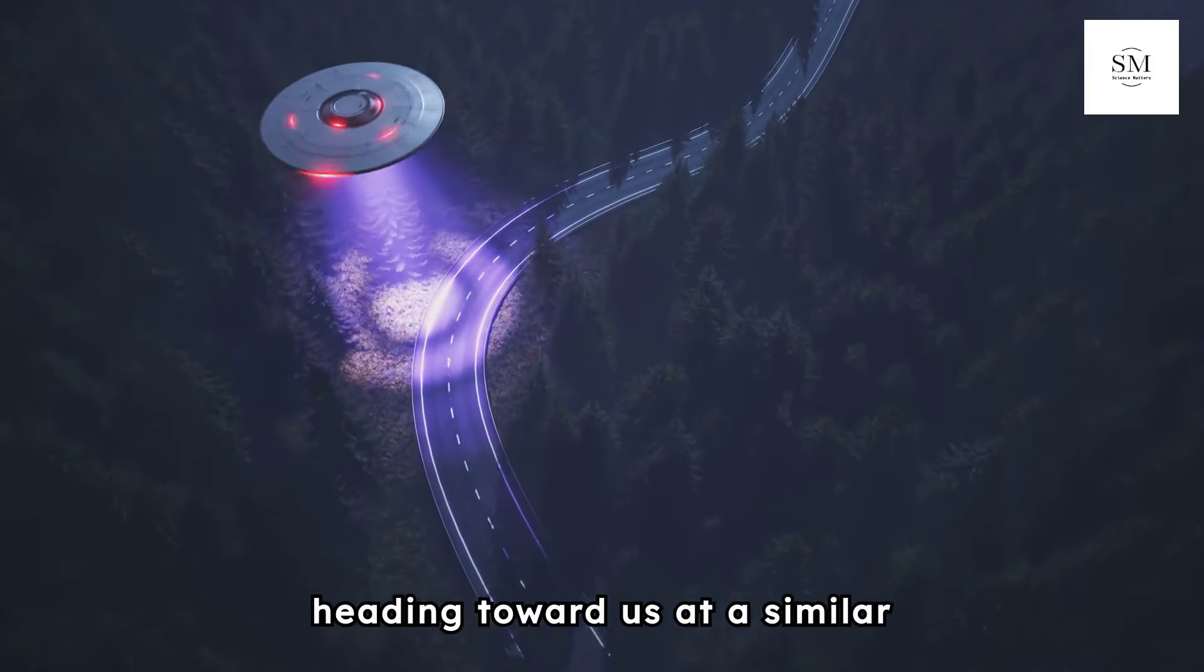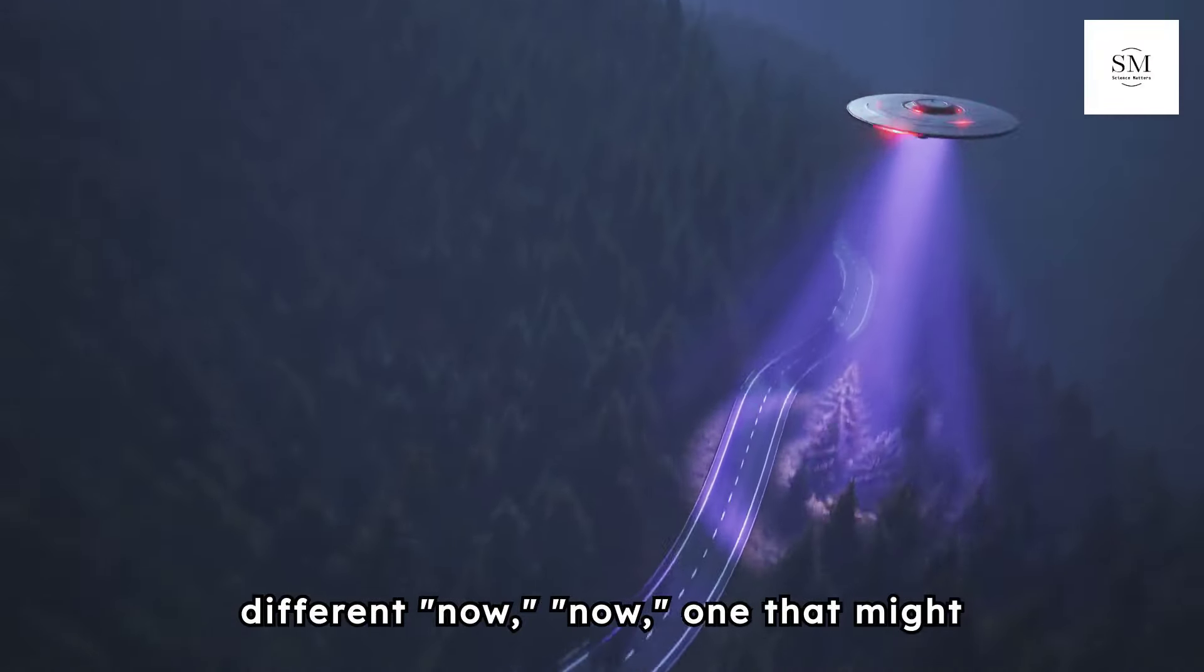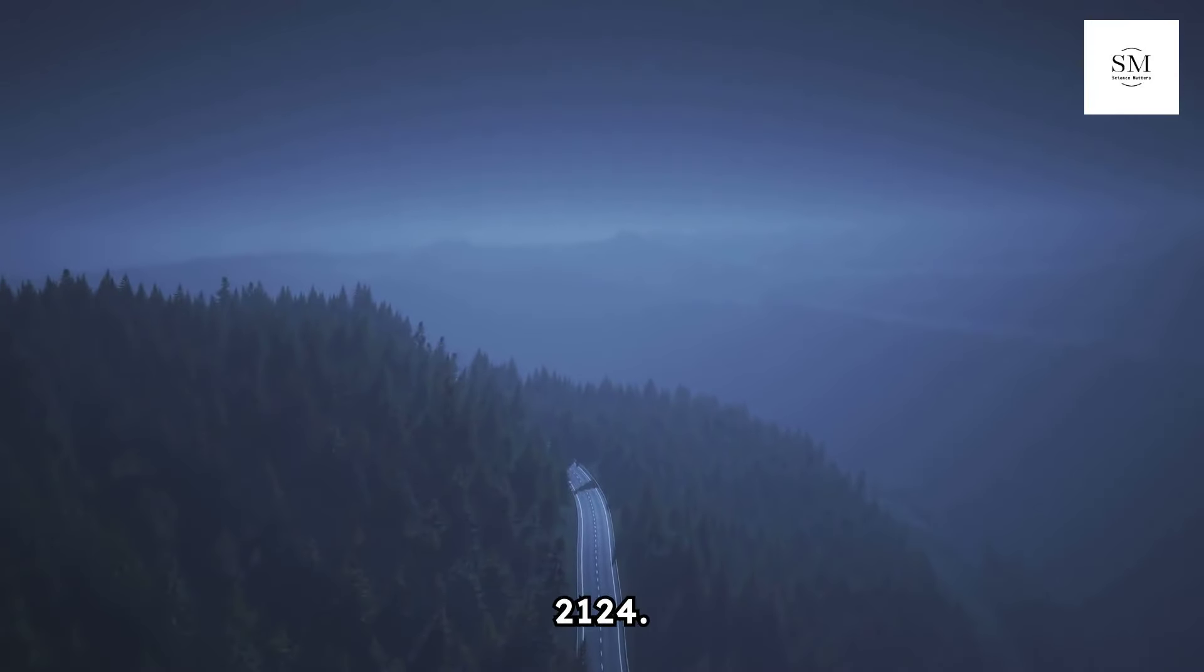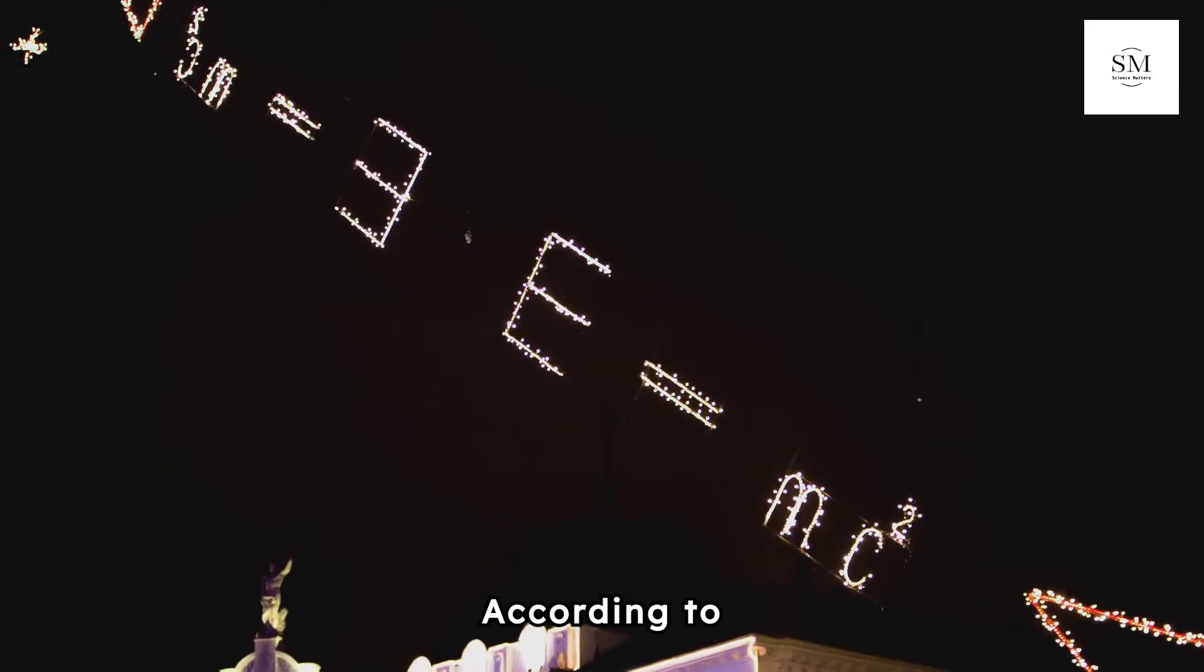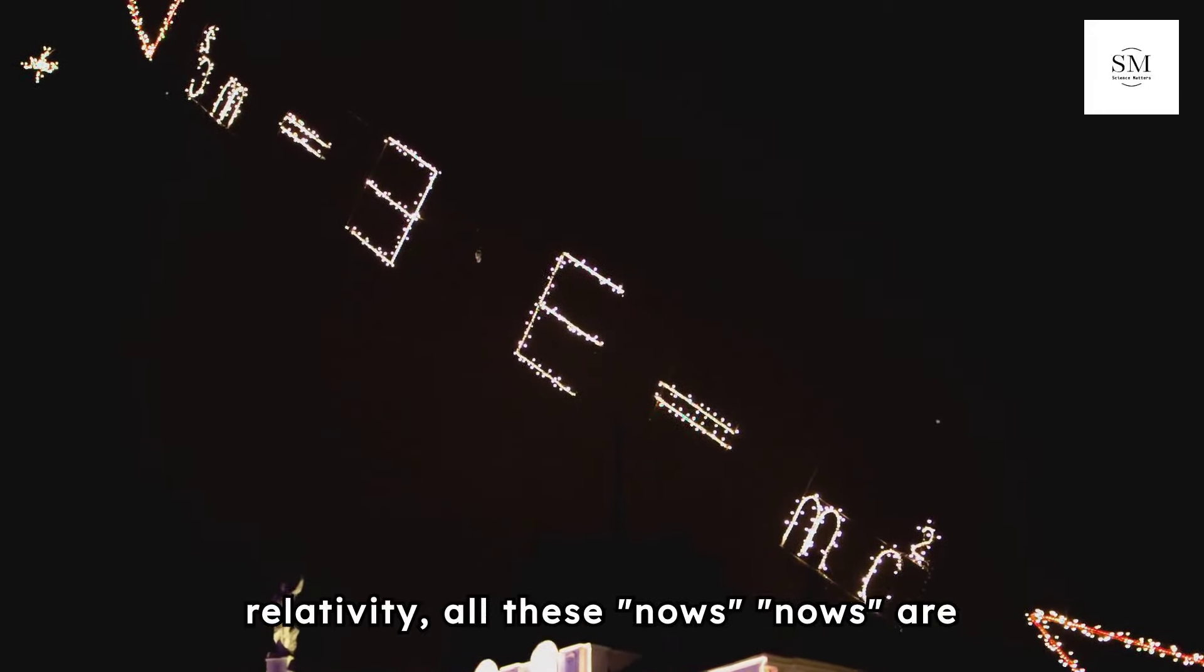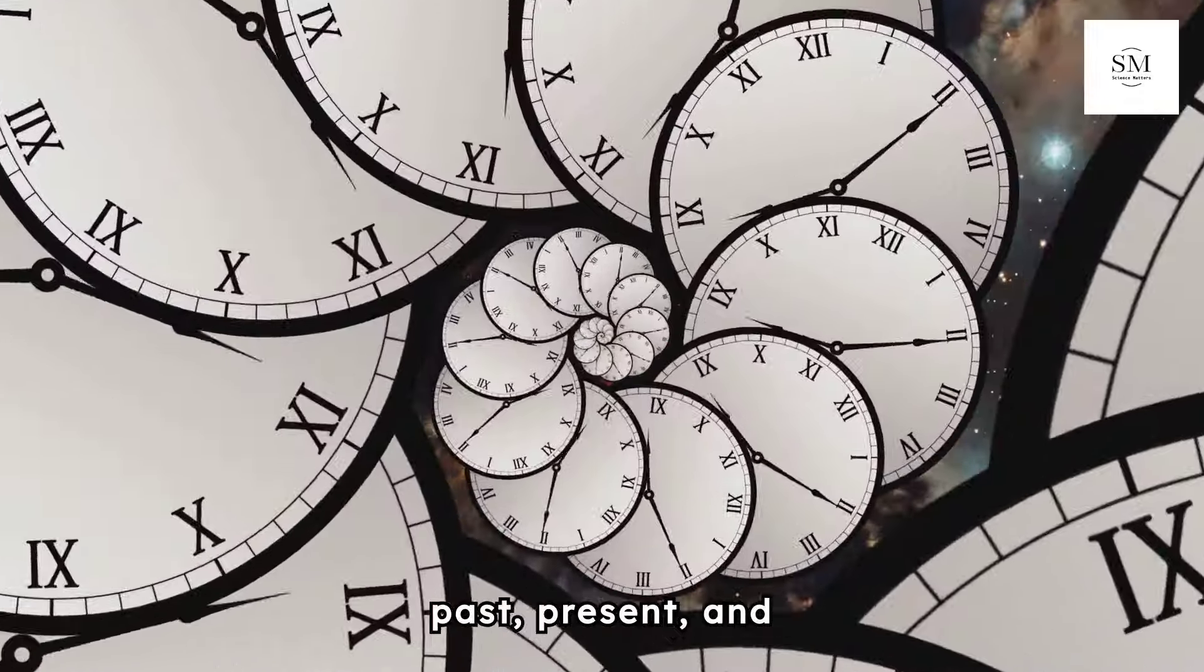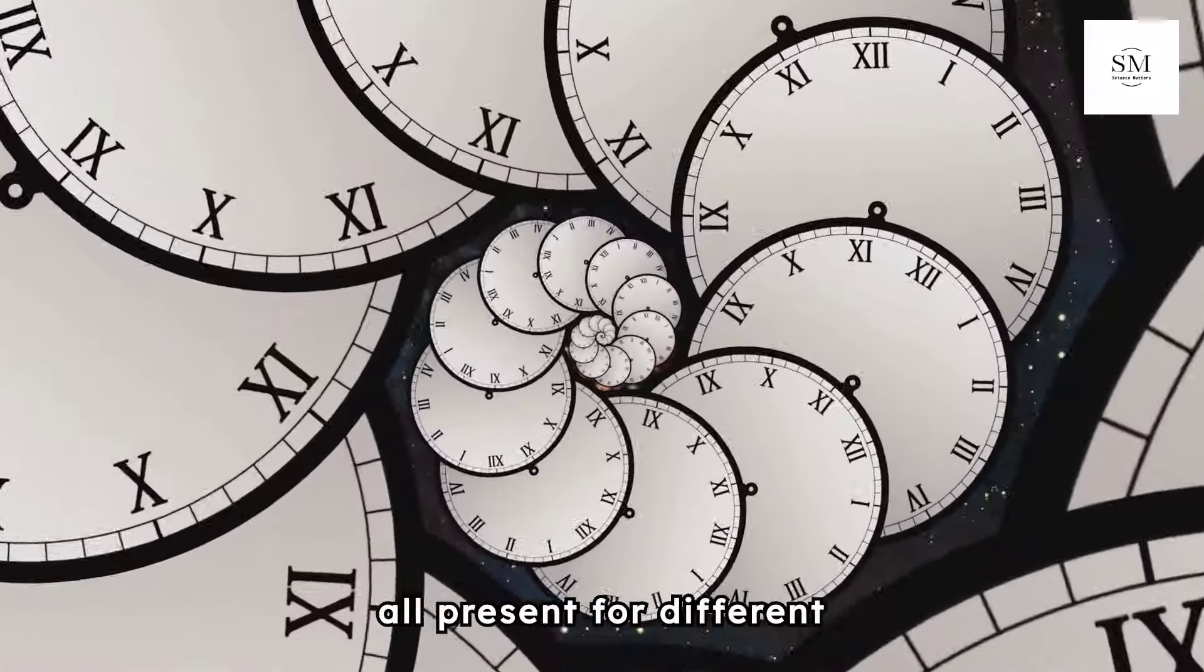The third spaceship is heading toward us at a similar speed. It experiences a different now, one that might correspond with our future, say the year 2124. So which now is correct? According to relativity, all these nows are equally valid. This suggests that your past, present, and future must all exist at the same time because they are all present for different observers.